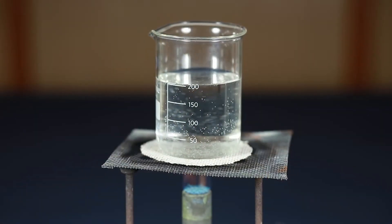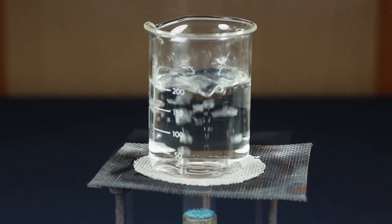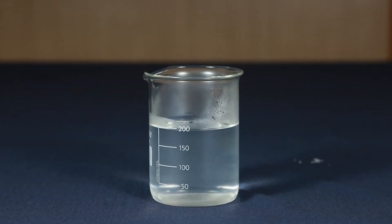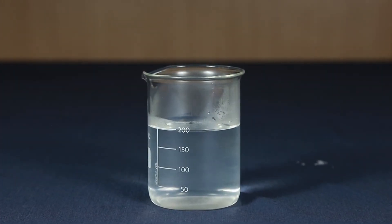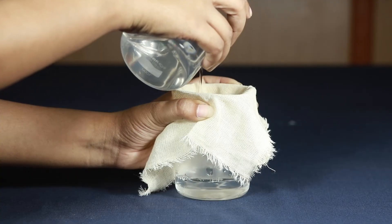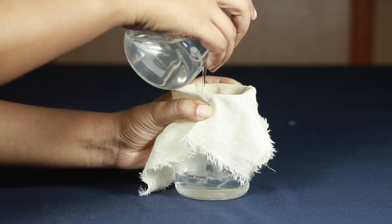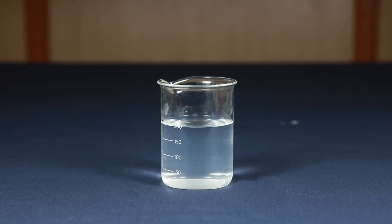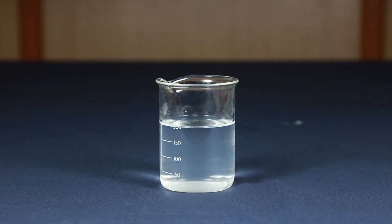Boil water for about 15 to 20 minutes to kill the germs. Let the water cool before filtering it once more using a clean piece of muslin cloth. This is your clean water.